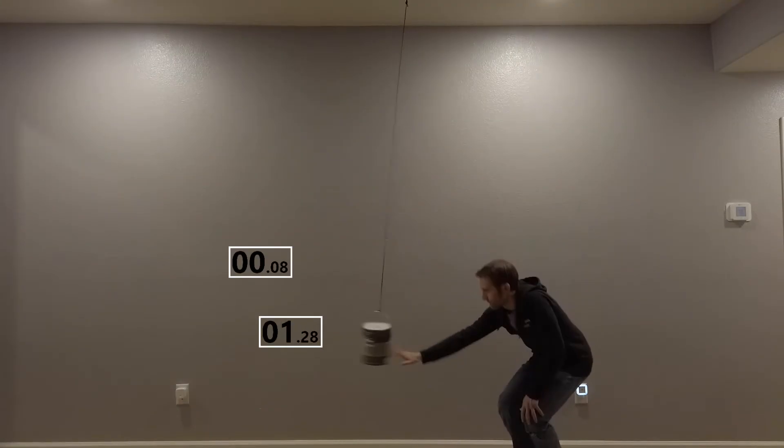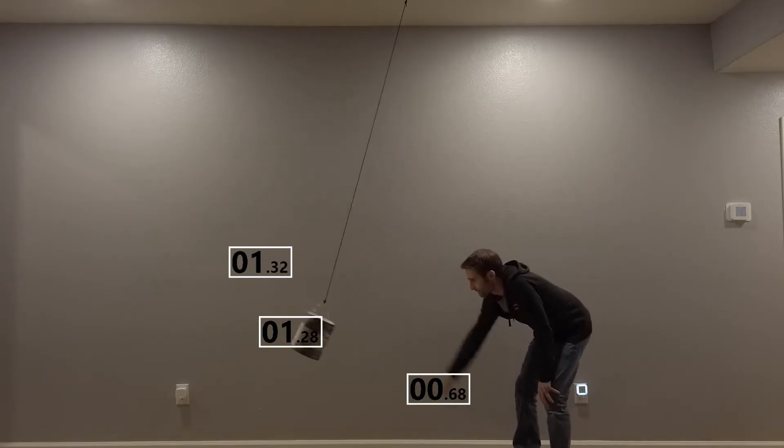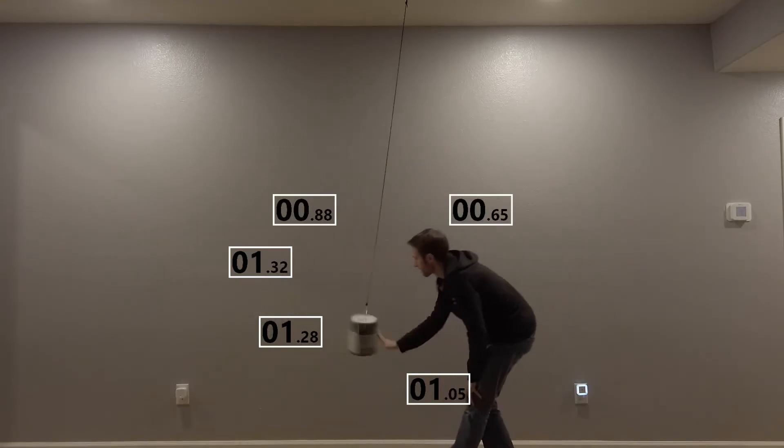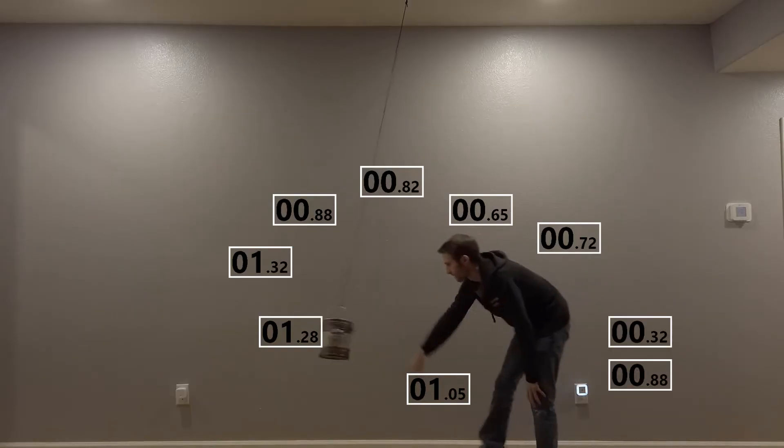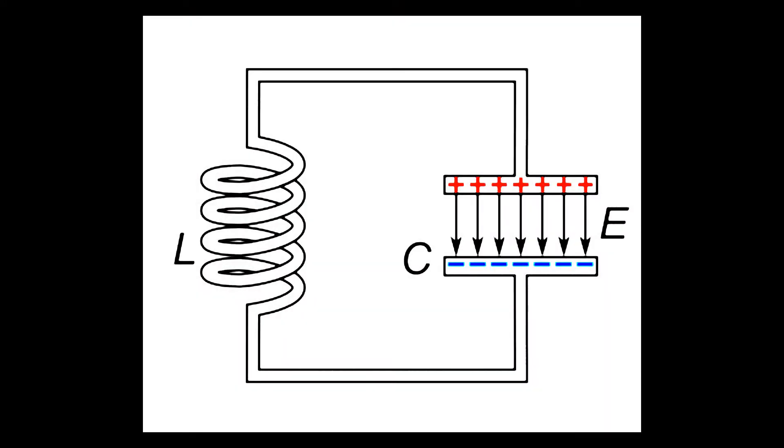If we add energy to the system randomly it will still oscillate but not in a way that is harmonious with its natural frequency. Let's take a look at what resonance looks like in an electric circuit. This is what is known as a tank circuit or a resonant circuit.